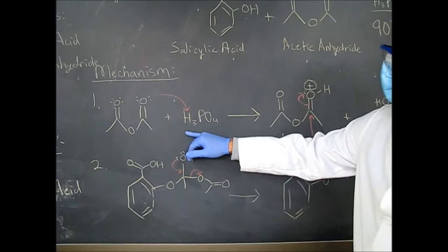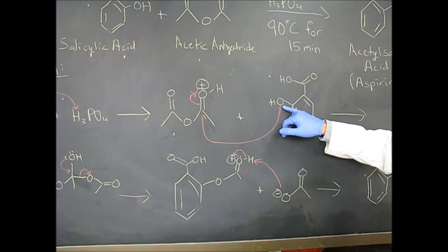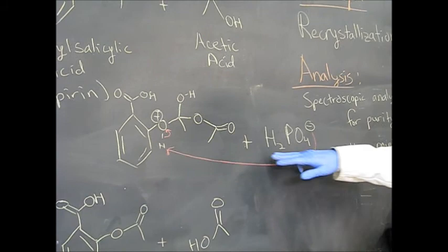So the way this mechanism works is first the acetic anhydride will get protonated here from the acid catalyst. Once you get this protonated oxygen right here, this carbon right here becomes much more open for attack by this oxygen. So we'll form this kind of intermediate right here with this positive oxygen from the OH group.